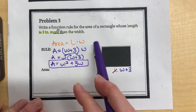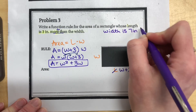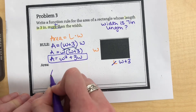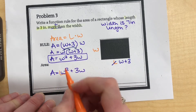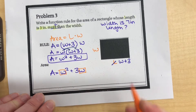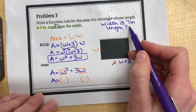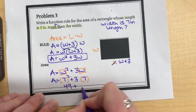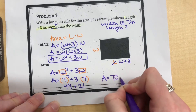There is another part to this question: if the width is 7, what would the area be? We're going to use the formula A equals W squared plus 3W and plug in 7 for W in each placeholder. A equals 7 squared plus 3 times 7. 7 squared is 49, plus 3 times 7 which is 21. So my area would end up being 70 inches squared.